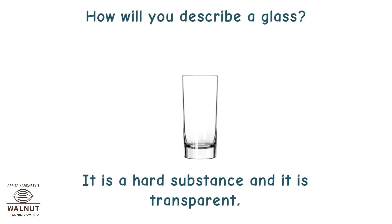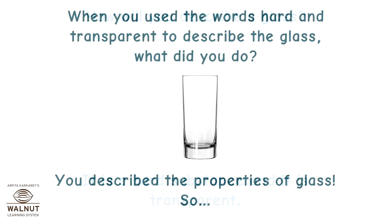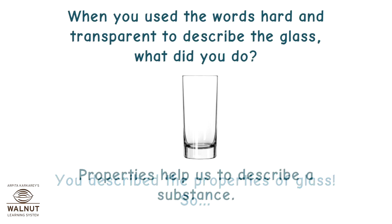How will you describe a glass? It is a hard substance and it is transparent. When you use the words hard and transparent to describe the glass, what did you do? You described the properties of glass. Properties help us to describe a substance.